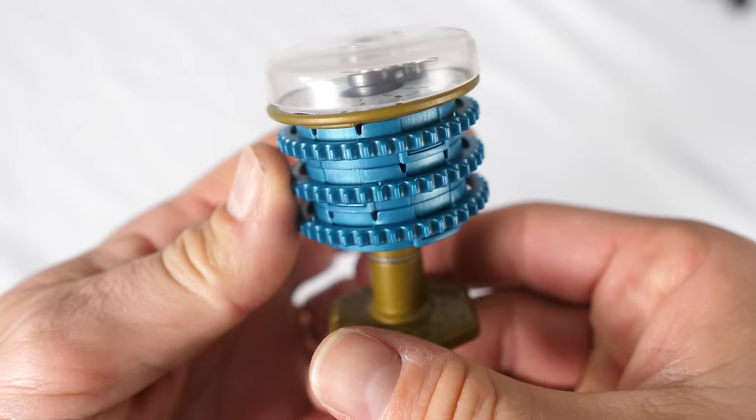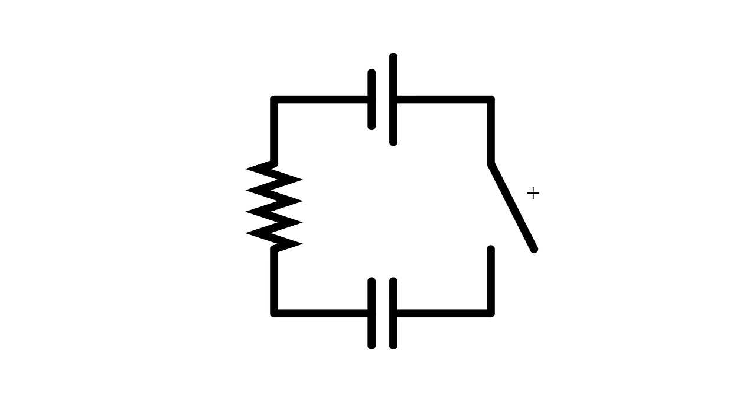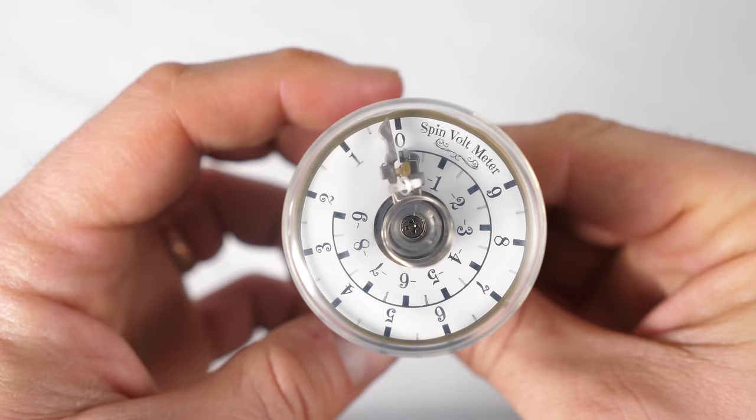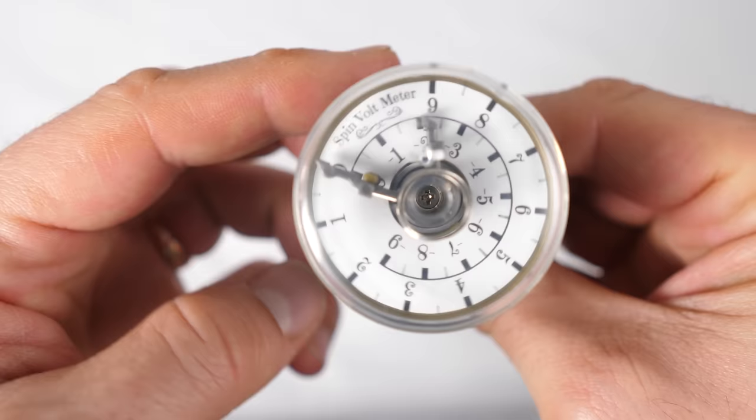This is the spintronics equivalent of a capacitor. The more you try and turn it, the harder it gets to turn in the same way that the more you try and shove charge into an actual capacitor, the harder it gets. And look, you can even see there's numbers on the dial. So you can see how charged up it is. Actually, this doubles as a voltmeter. So the numbers here are in volts.